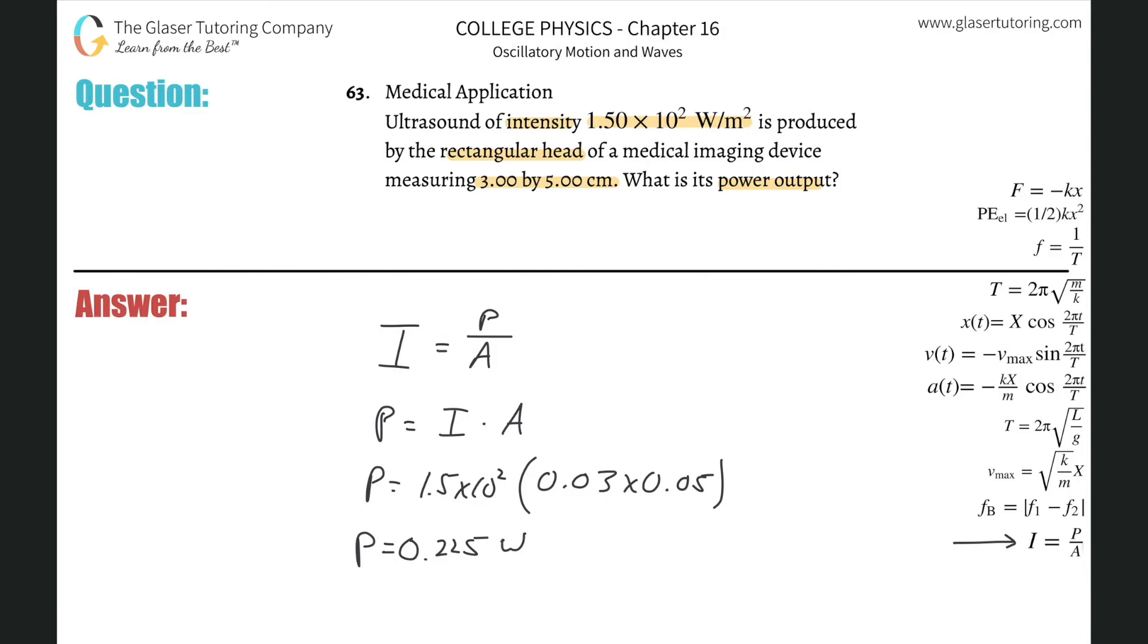Power is in terms of watts. You can also see how the units cancel: this is watts per meter squared (the intensity), and this is meter squared. So watts per meter squared times meter squared cancels out the meter squared.